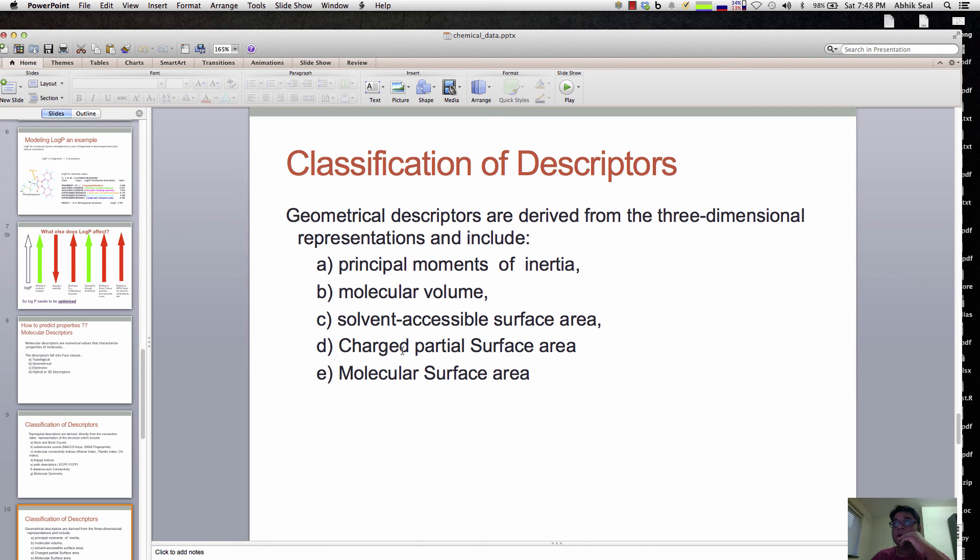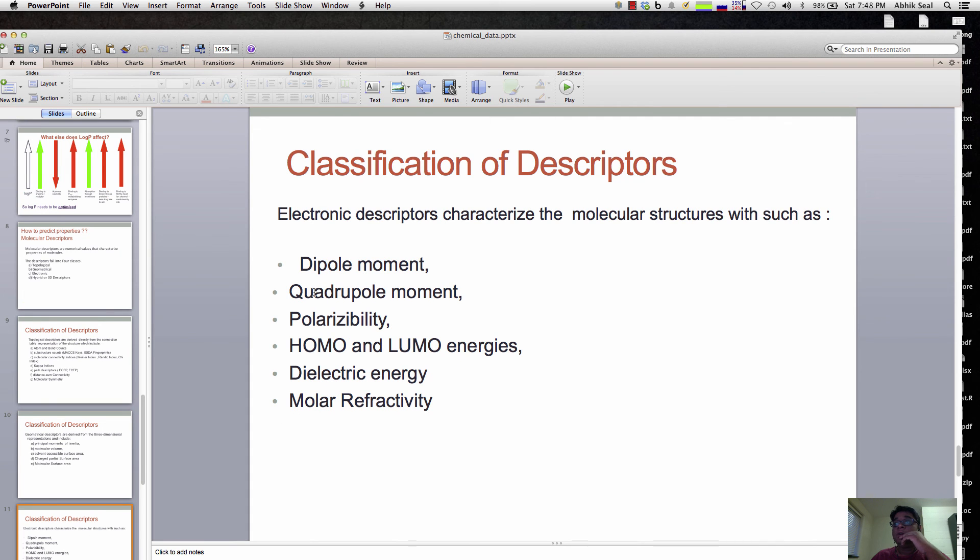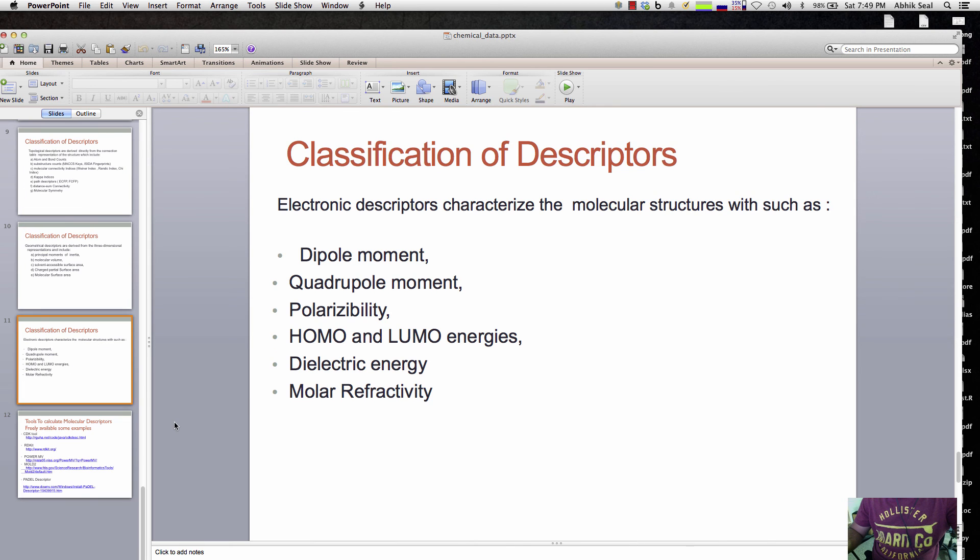There are other electronic descriptors like the dipole moment, polarizability, the highest occupied molecular orbital, the lowest unoccupied molecular orbital energies, molar refractivity, and dielectric constants. These are electronic ones which take a bit of time in calculating these kinds of descriptors.